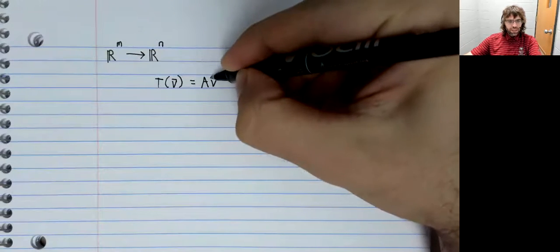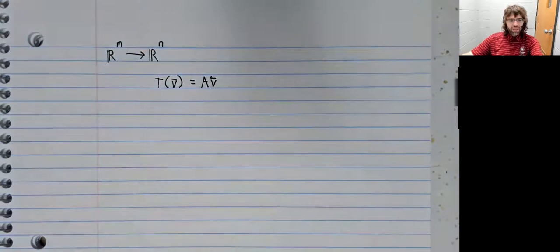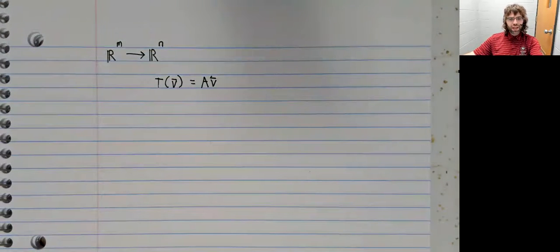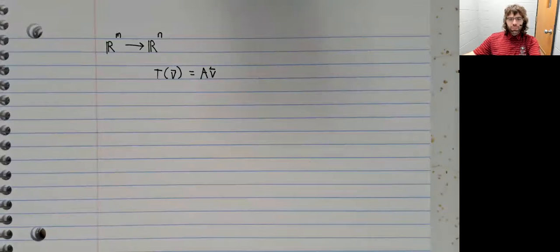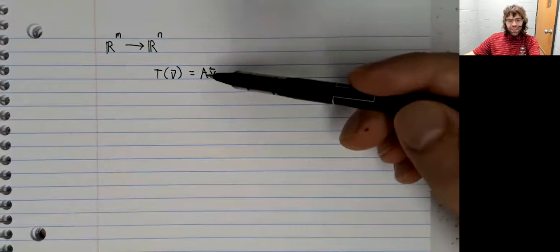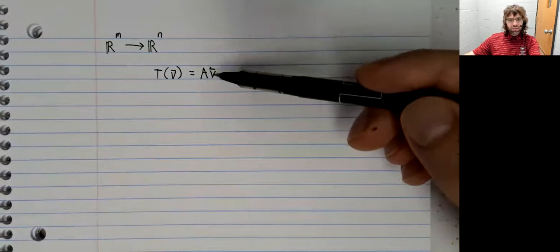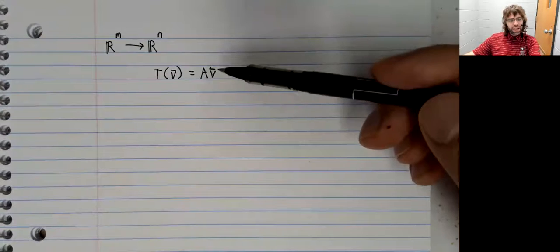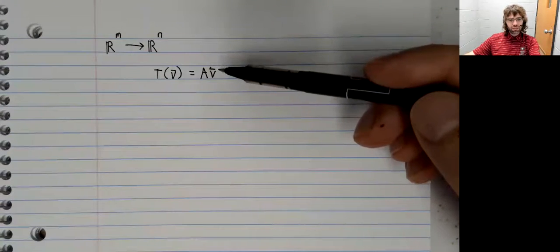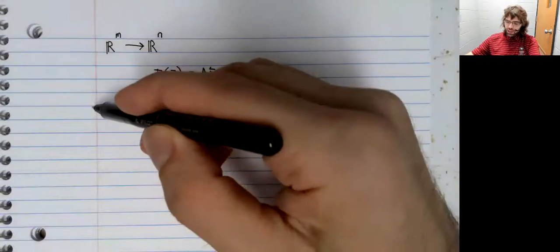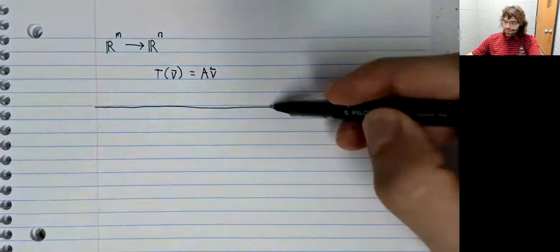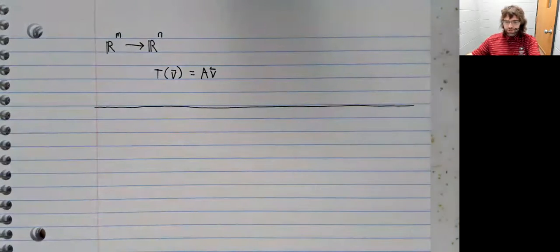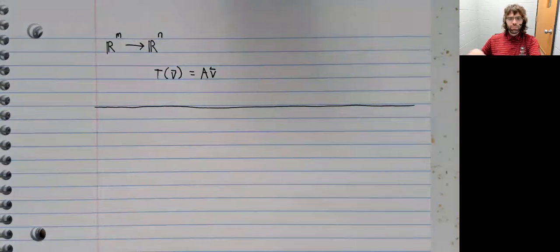Let's investigate this question with a linear transformation like this: T of V equals A times V. And remember that any linear transformation can be written in this way. That was a theorem from earlier in this section.